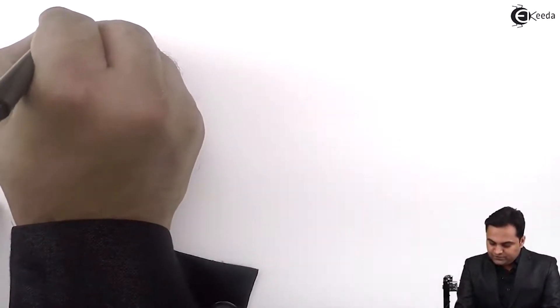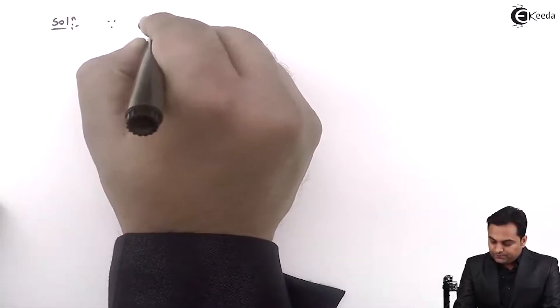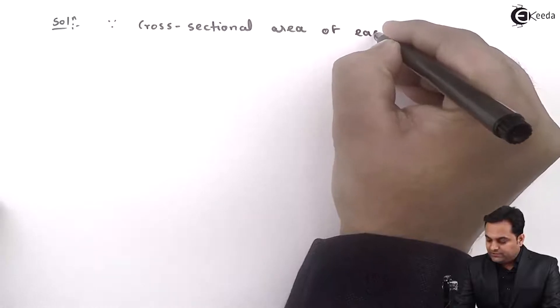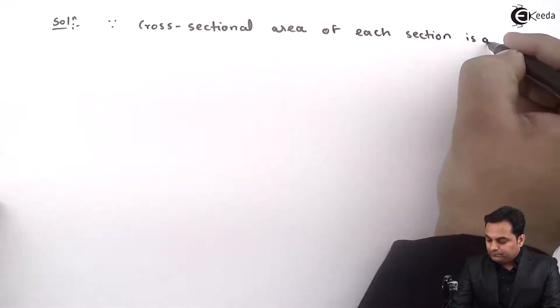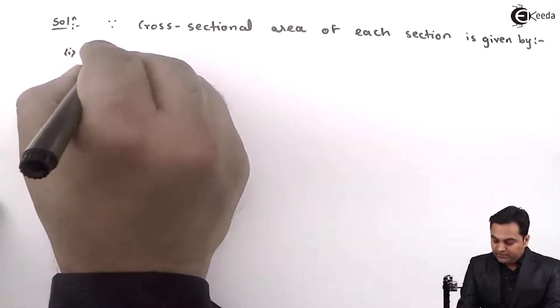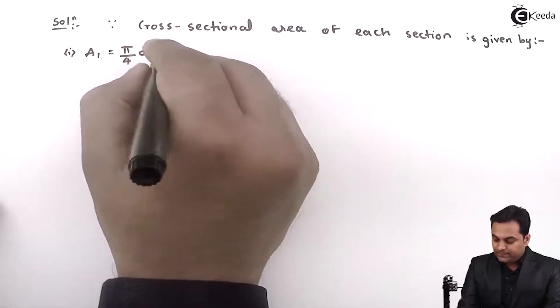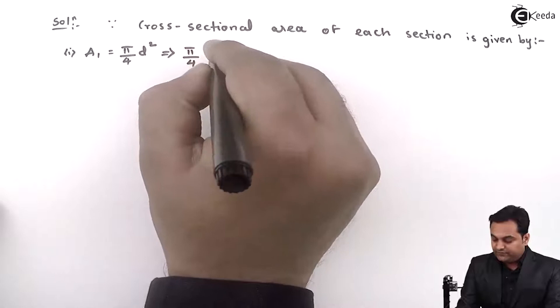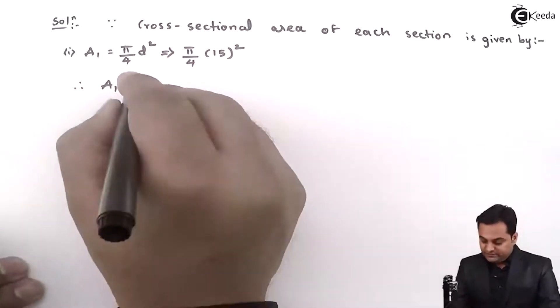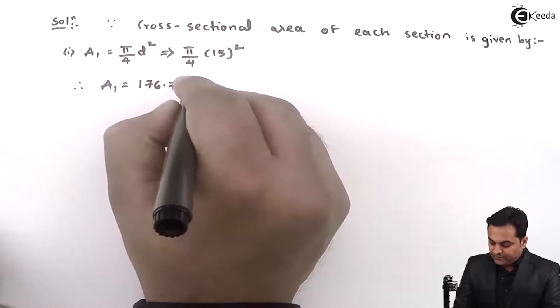Since diameters are given for the stepped bar, we can first calculate the cross-sectional area of each section. Area of Section 1: A1 = (π/4) × d1² = (π/4) × 15² = 176.71 mm².